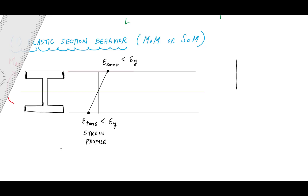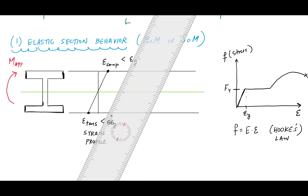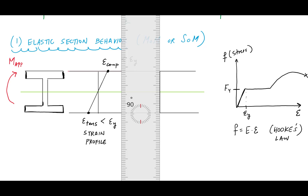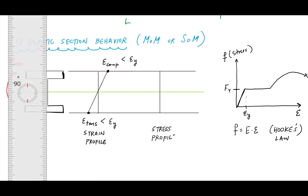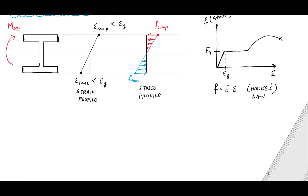If I look at a stress-strain curve of steel — this is definitely not to scale — we have the yield stress and the yield strain. What we're saying is that all the materials are linear elastic: the strains are less than the yield strain. And in that linear elastic region, because of Hooke's law, the stresses are also less than the yield stress. I can draw a stress profile showing compressive stress at the top and tensile stress at the bottom, and those normal stresses have not yielded — they are less than the yield stress, capital Fy.